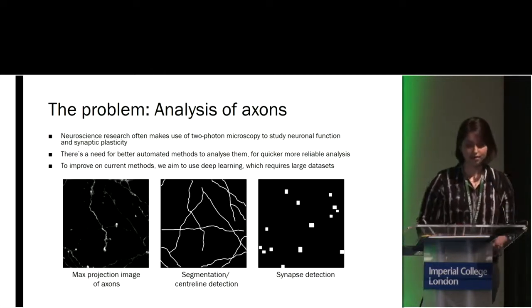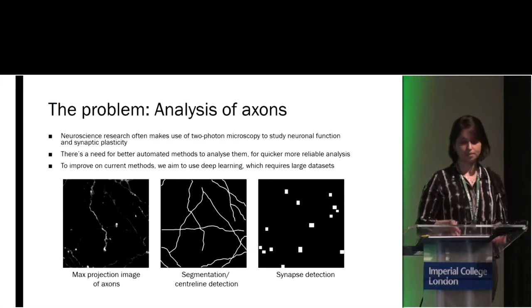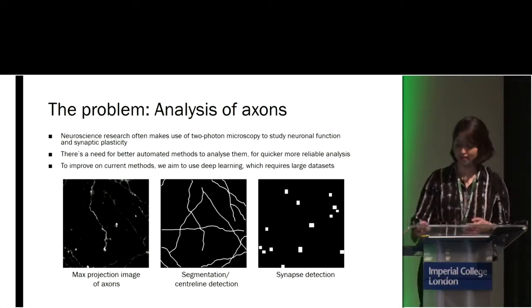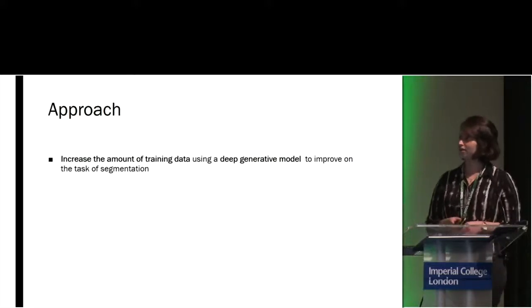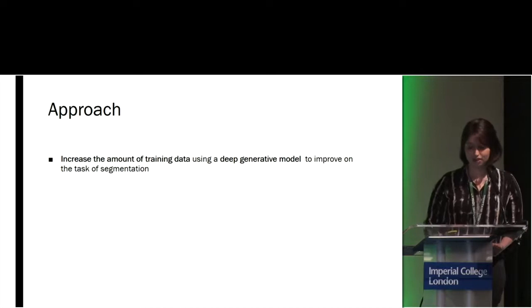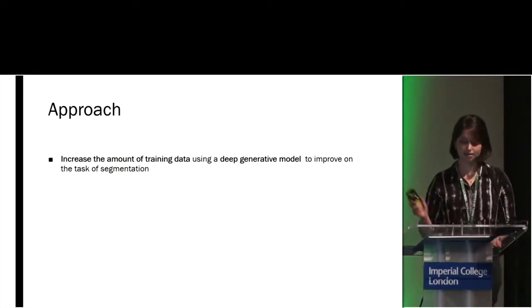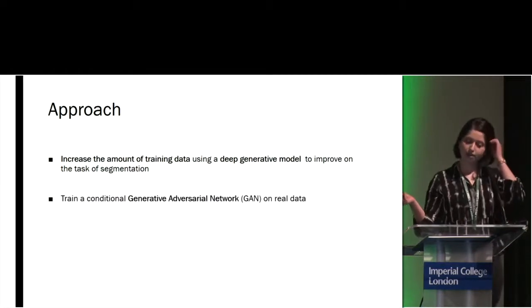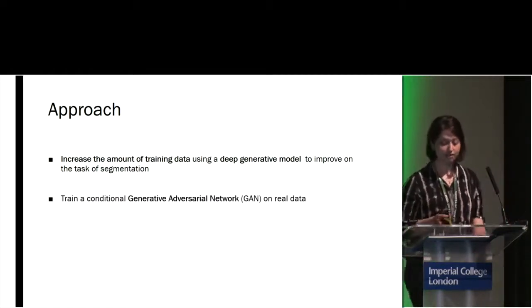In order to improve the method of segmentation we aim to use deep learning. However, we have a quite small dataset. So our approach is to increase the amount of training data using deep generative methods in order to improve on the task of segmentation. We do this using conditional GANs trained on real data.